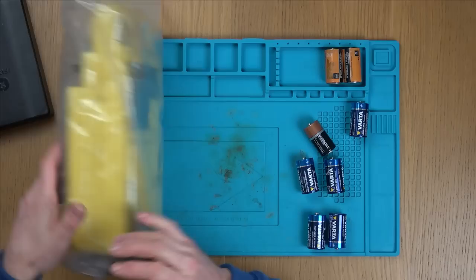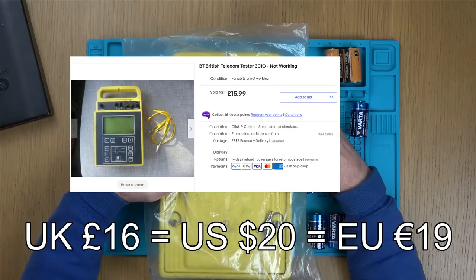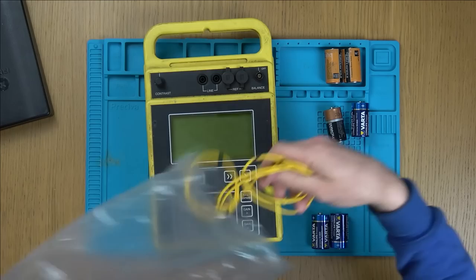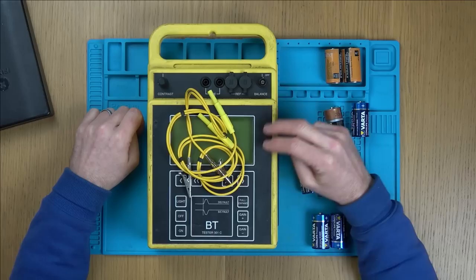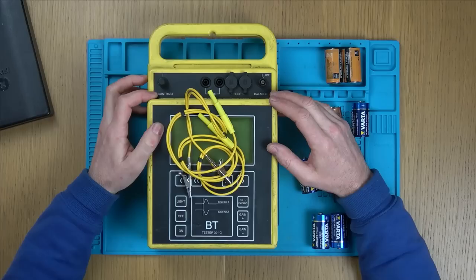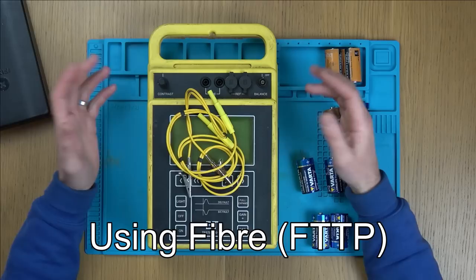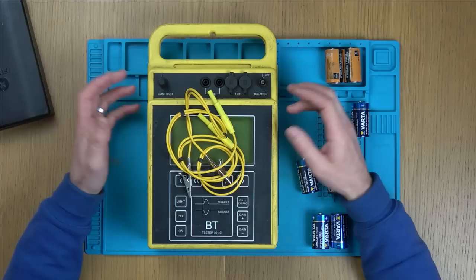If you're a field engineer like I used to be, this here saved you so much time and customers used to think you were some sort of wizard because you could pinpoint a fault. We used to call this a mole. The actual proper name for it is a tester 301c. I bought this for £40 off eBay, but this is now obsolete. As of the mid 2000s, BT then introduced something called a Hawk tester, which was kind of like a multimeter and this built into one piece of kit.